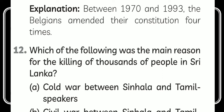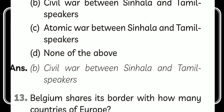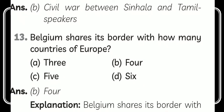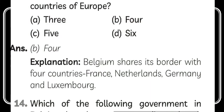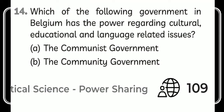The next question is: which was the main reason for the killing of thousands of people in Sri Lanka? The answer is the civil war between Sinhala and Tamil speakers. The next question is: Belgium shares a border with how many countries? Four — France, Netherlands, Germany, and Luxembourg.